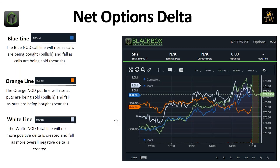This study only calculates delta change based off the open and includes all strikes, all expirations, and all dollar amounts. The beauty of how NOD works is it calculates delta — it's not just dollar flow. Someone can buy a million dollars of Tesla calls, but if they're only a 10 delta, that has a lesser effect than buying five hundred thousand dollars of Tesla calls with a 50 or 60 delta. This gives you a direct representation of what is potentially pushing price based on what the market maker is doing.